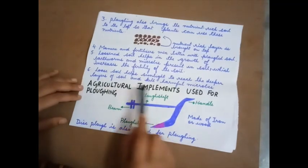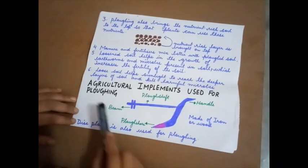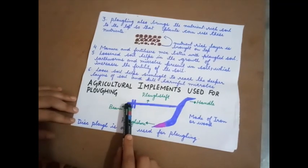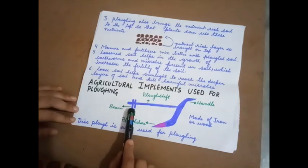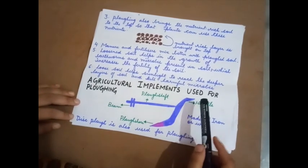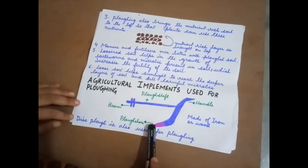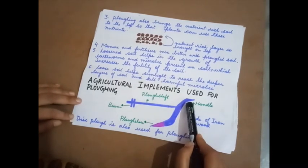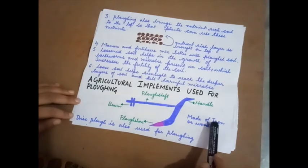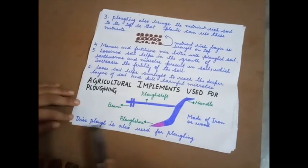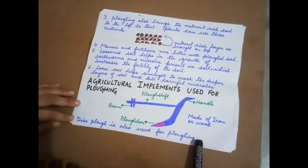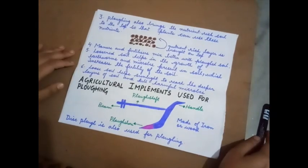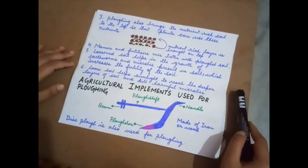The last advantage is that loose soil helps sunlight reach deeper layers of soil and kill harmful microbes. Moving on to agricultural equipment used for plowing: the traditional plow has a plow shaft, one end attached to cattle and the other end fitted with a plow share — a blade used to plow the soil — plus a handle held by the farmer. The entire plow is made of iron or wood. Nowadays, a disc plow is used instead, and a video is attached showing how it works. As homework, make a list of the points mentioned in that video.